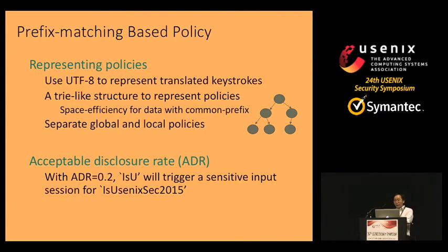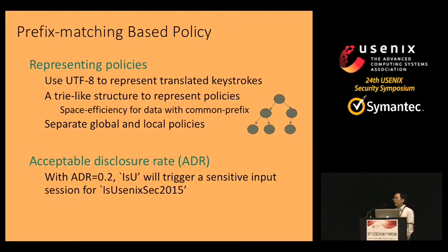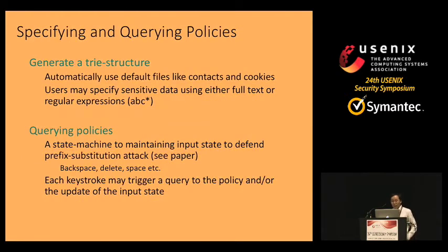The first issue with prefix matching is how to represent the policy, since input to IBOX could be in multiple languages — English, Chinese, or Japanese. IBOX uses UTF-8 to represent translated keystrokes in a trie-like structure to represent the policy, and separates global and per-application policies using different trie structures. To determine whether an input session is sensitive, IBOX uses a term called the acceptable disclosure rate. For example, with an acceptable disclosure rate of 0.2, a three-character prefix 'ISU' would trigger a sensitive session for the password 'UCSAC2015'. IBOX can use default sensitive files like contacts or cookies to generate a default global trie structure.